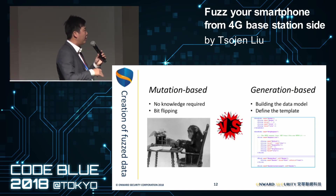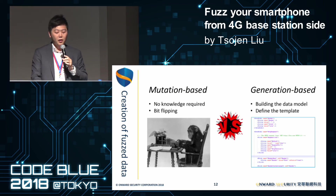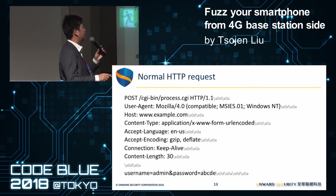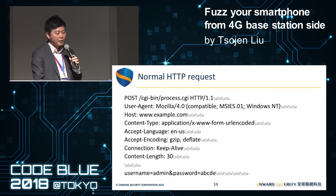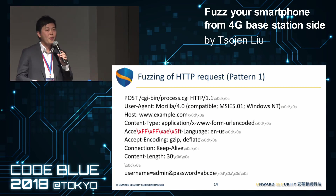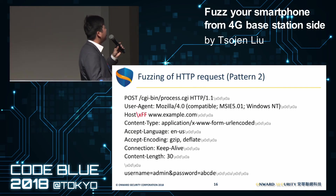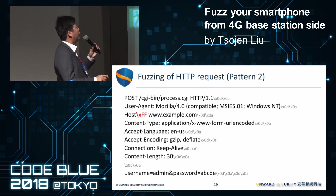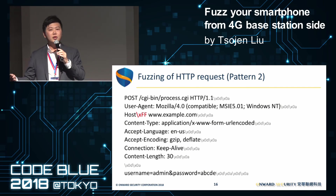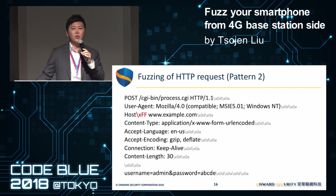In our LTE fuzzing project, we use the generation-based approach to generate a large amount of fuzzing data. For example, looking at an HTTP POST to process.cgi, one fuzzing pattern is to change the Accept header name to some arbitrary ASCII character. Another approach is to change the separator between the header name and its value — the separator should be a colon, but we change it to a non-ASCII character. You can use your imagination to generate fuzzing data, not only 0xFF — you can use anything you want for testing.